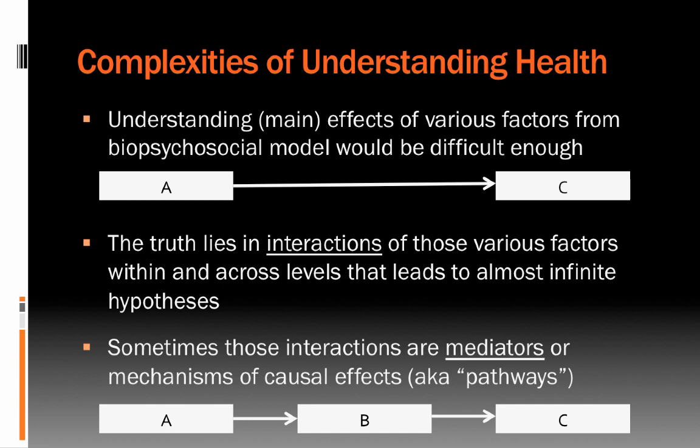Sometimes these interactions are what we call mediators, or mechanisms of causal effects — we'll refer to these as pathways. This is the A to B to C way that a factor A may influence an ultimate outcome C. For example, let's say we have a social media campaign to increase the consumption of fruits and vegetables. The campaign is A, and the outcome is eating more fruits and vegetables. We may find that the campaign only has an effect on the outcome C to the extent that there is a change in some variable in the middle, B.